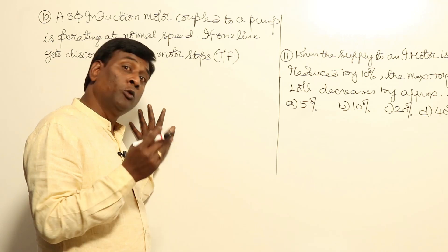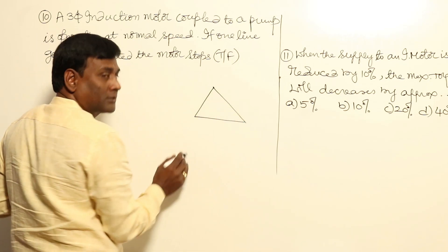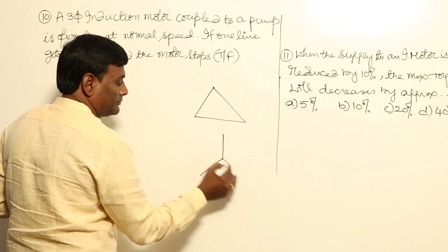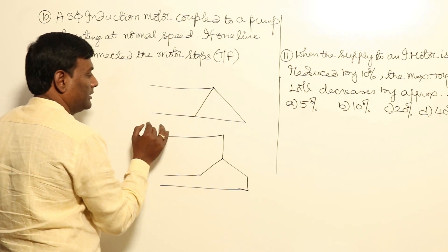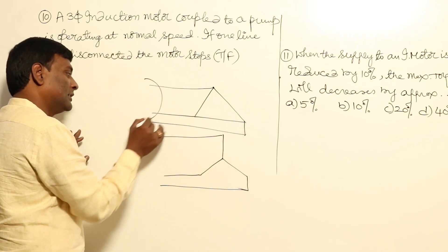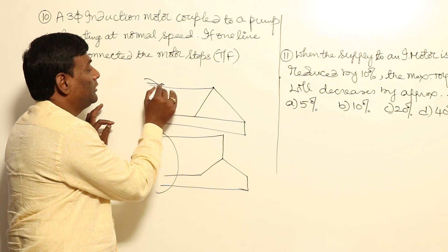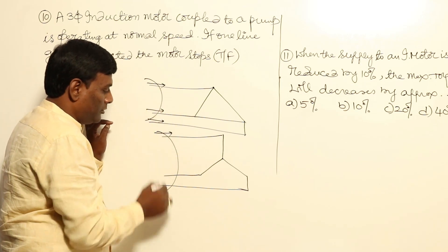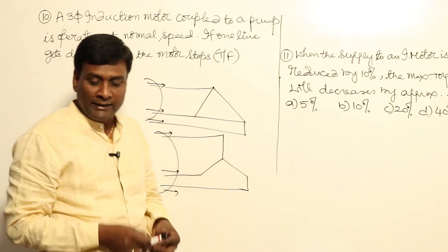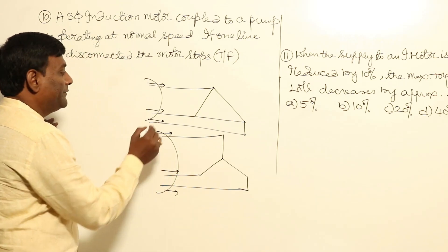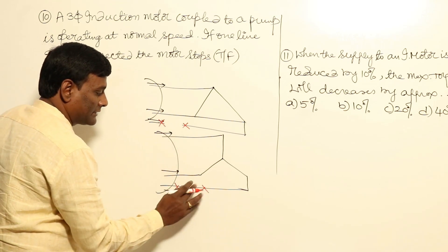For example, if I have a delta-connected or star-connected motor, with a three-phase supply, three time-displaced currents flow: Ia, Ib, and Ic. We need not maintain any return path because Ia + Ib + Ic = 0 at any instant of time. Now, if one phase gets disconnected, what happens?